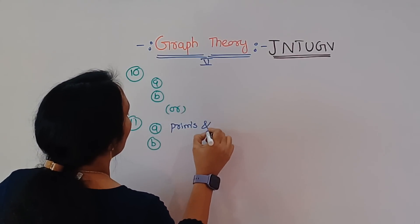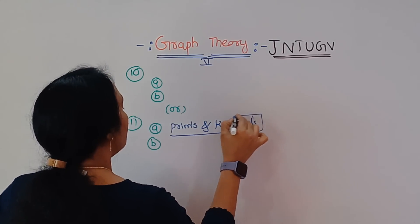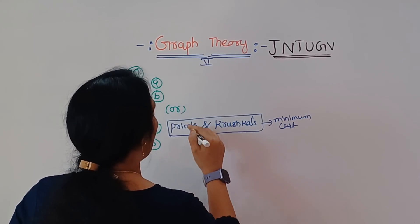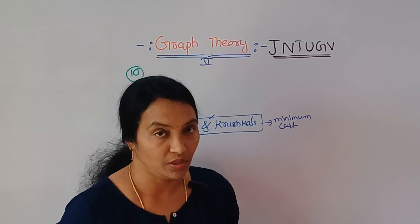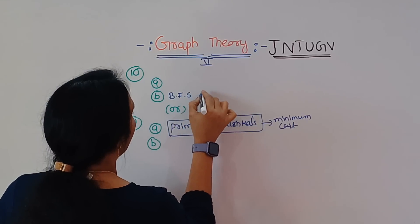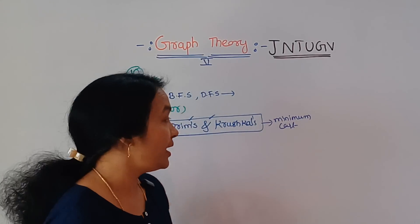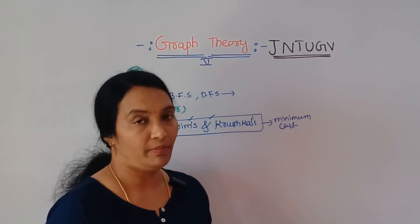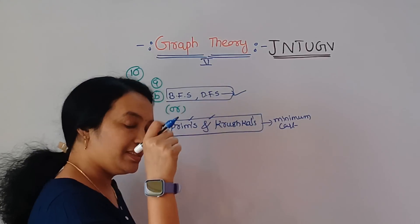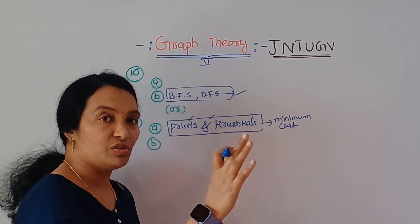Prim's and Kruskal's Minimum Cost Spanning Tree. Then BFS DFS - Breadth First Search and Depth First Search Spanning Trees, Shortest Path, Dijkstra's Algorithm. For example, if you're solving for 4 to 8 marks, you can use Prim's and Kruskal's and BFS.